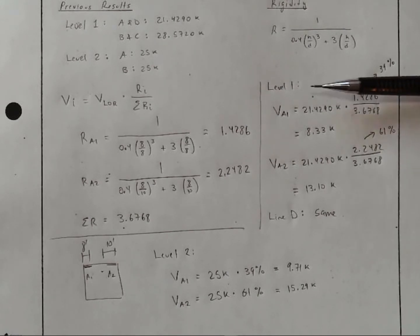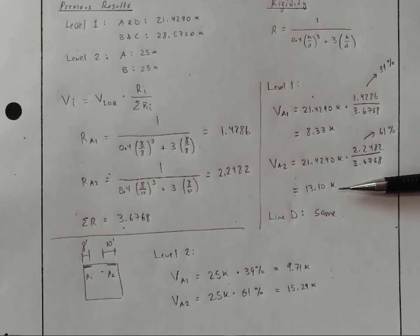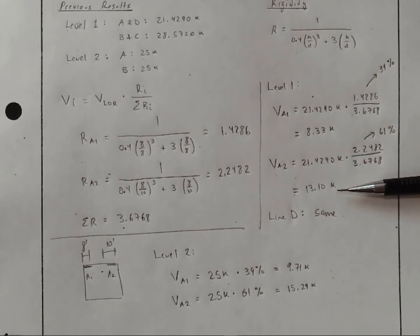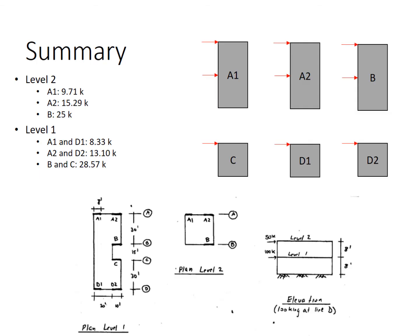To summarize, level 1, line A1, and line A2 is the same as level 1, line D1, and D2. Level 2, line A1 and A2. Let's summarize the problem.